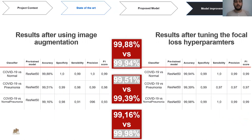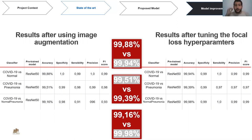Starting with results after image augmentation, the model produced an accuracy of 99.88% for COVID-19 versus normal, 99.51% for COVID-19 versus pneumonia, and 99.60% for COVID-19 versus normal-plus-pneumonia. The performance was significantly improved for two classifiers but lowered slightly for the third, COVID-19 versus normal-plus-pneumonia. After tuning the focal loss hyperparameters, the model achieved an accuracy of 99.92% for COVID-19 versus normal, 99.39% for COVID-19 versus pneumonia, and 99.98% for COVID-19 versus normal-plus-pneumonia — almost perfect results.